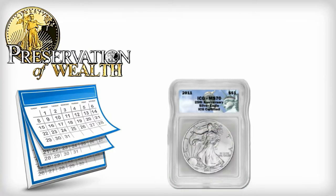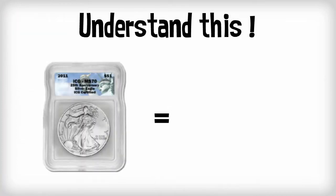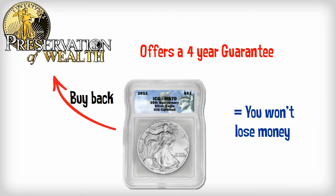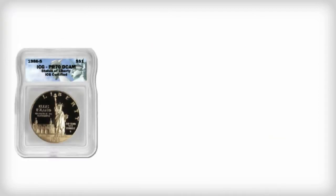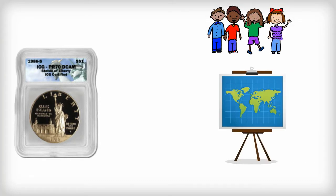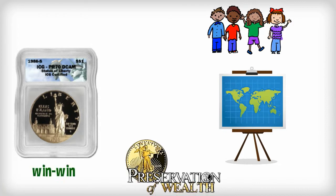When you partner with Preservation of Wealth, the product you will receive each month is a silver coin. I really want you to understand this. These coins have value, in fact, they have guaranteed value. Even if the value of silver goes down after you purchase these coins, Preservation of Wealth gives you a four year guarantee that they will purchase them back from you so you are guaranteed not to lose money on these coins. You can either keep them and pass them on to your kids or sell them in the open market or you can even sell them back to Preservation of Wealth. Either way, it's a win-win situation.